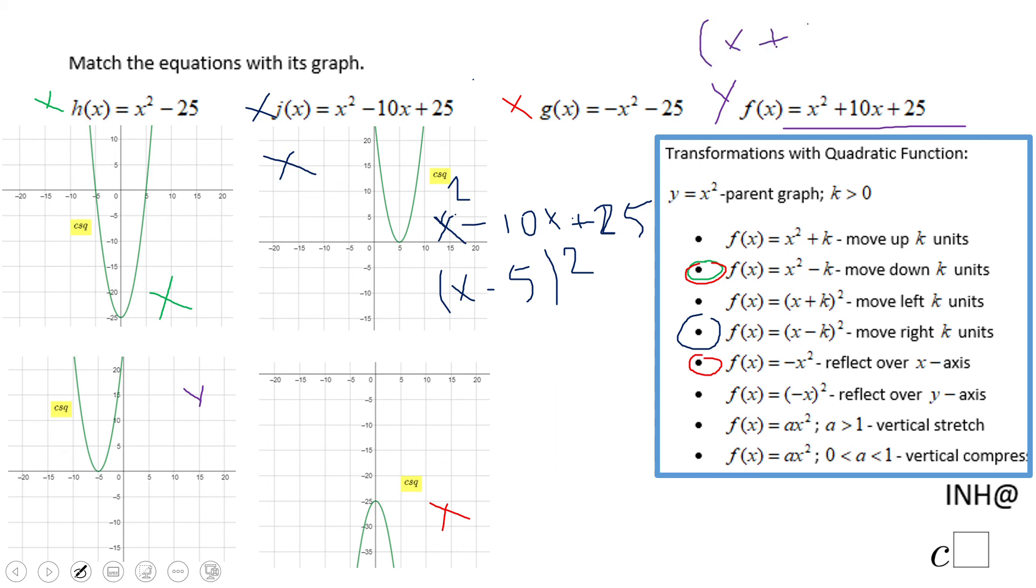This means the graph moves left 5 units. So yeah, that's the one.